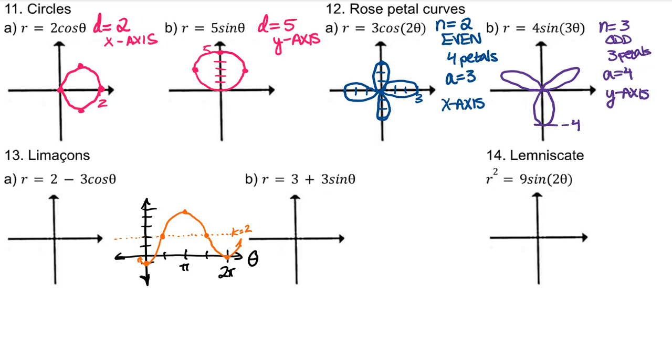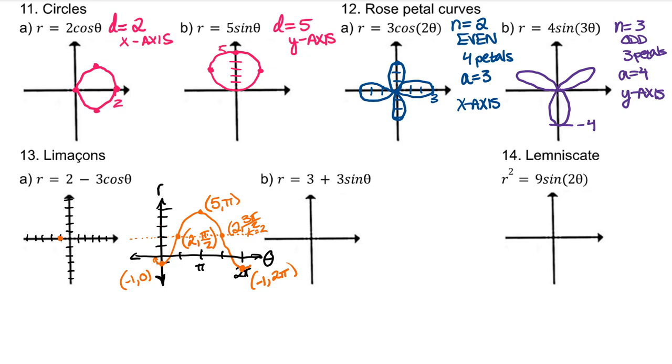Negative 1, 0 would be at 1, 0, but reflected over the pole. 2 pi halves is a radius of 2, but an angle of pi halves. 5 pi would have a radius of 5 and a point at the angle pi. 2, 3 pi halves has a radius of 2 and at the angle 3 pi halves. Negative 1, 2 pi is the point at 1, 2 pi reflected over, so back to the original starting point. This is a limaçon with an inner loop. A limaçon with an inner loop always goes through the origin.